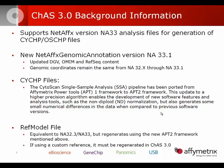New to CHAS 3.0 is that the single sample analysis pipeline has been ported from APT1 (Affymetrix Power Tools 1) to the updated APT2 framework. This higher precision algorithm allowed development of new features such as the non-diploid normalization algorithm for cancer samples on Cytoscan. This porting generates small numerical differences compared to previous versions — no more than you'd see in technical replicates, typically in the fourth, fifth, or sixth decimal place. More information is available through support at affymetrix.com or by calling 888-DNA-CHIP.